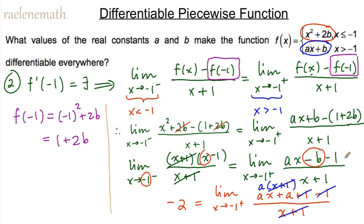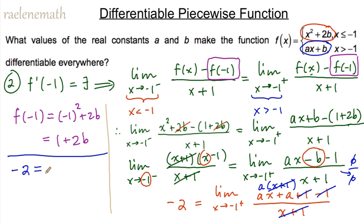What remains is just the constant a, and the limit as x approaches negative one of the constant a is simply a. Setting the left-hand derivative equal to the right-hand derivative gives negative two equals a. Back-substituting into b equals negative one minus a: b equals negative one minus negative two, which equals positive one.